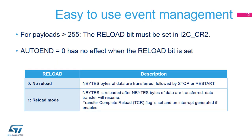When the payload is greater than 255 bytes, the reload bit must be set in I2C control register 2. In this case, the transfer complete reload (TCR) flag is set after the programmed number of bytes has been transferred. The additional number of bytes to be transferred is programmed when the TCR bit is set, and then the data transfer will resume. The I2C clock is stretched low as long as the TCR bit is set. The reload bit is used in master mode when the payload is greater than 255 bytes, and in slave mode when slave byte control is enabled. When the reload bit is set, the auto end bit has no effect.